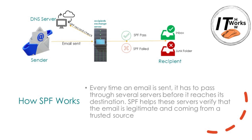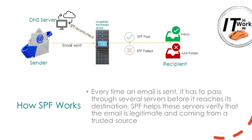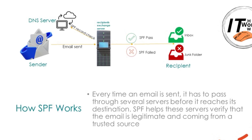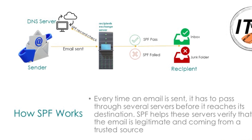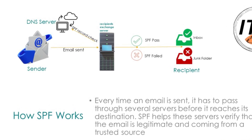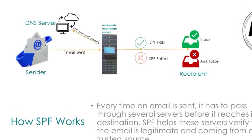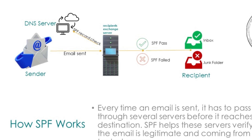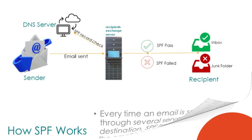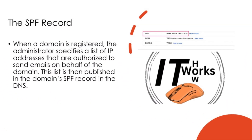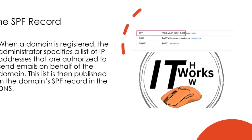How exactly does an SPF record work? When a sender sends an email, the recipient exchange server verifies the SPF record — whether that email originated from an IP address authorized for that domain to send email. If it checks out, the email goes to the recipient's inbox. If the SPF record fails, the email goes to the spam or junk folder, or sometimes it is rejected. This helps prevent email spoofing and protects recipients from phishing and other malicious emails.